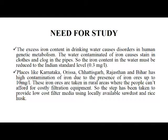Need for study: The excess iron content in drinking water causes disorders in human genetic metabolism. Water contaminated with iron causes staining of clothes and clogging of pipes. So the iron content in water must be reduced to the Indian standard level of 0.3 mg per litre. Places like Orissa, Chattisgarh, Karnataka, Bihar, and Rajasthan have high contamination of iron due to the presence of iron ores, up to 10 mg per litre. These iron ores are found in rural areas where people cannot afford costly filtering equipment, so a step has been taken to provide low-cost filter media using locally available sawdust and rice husk.